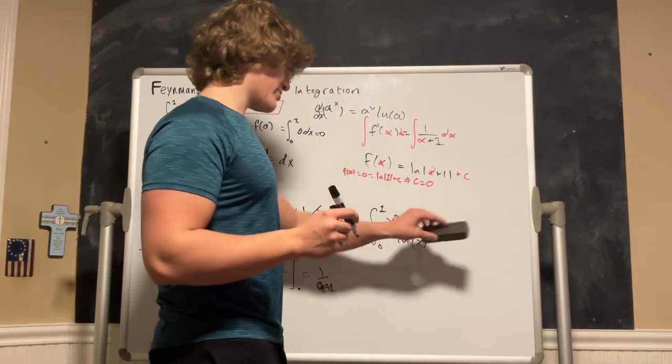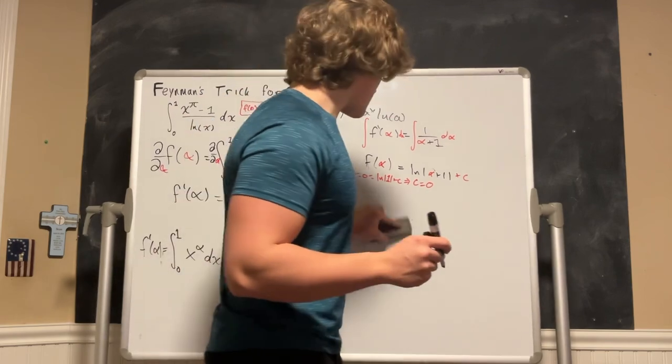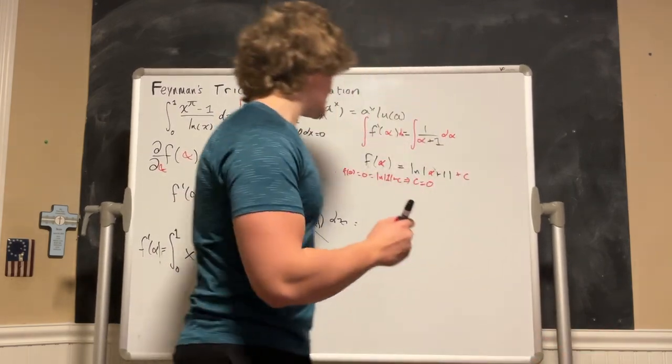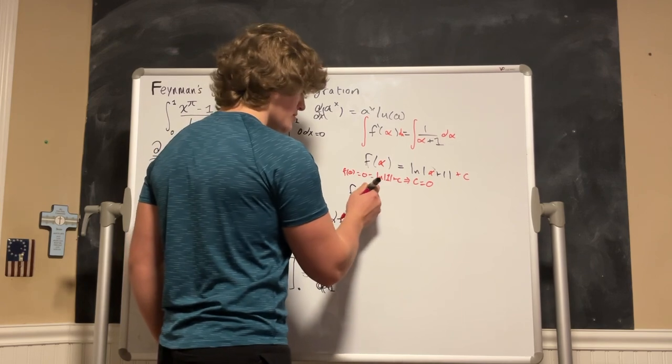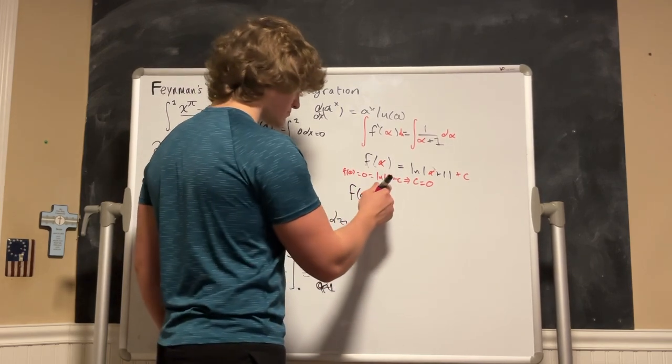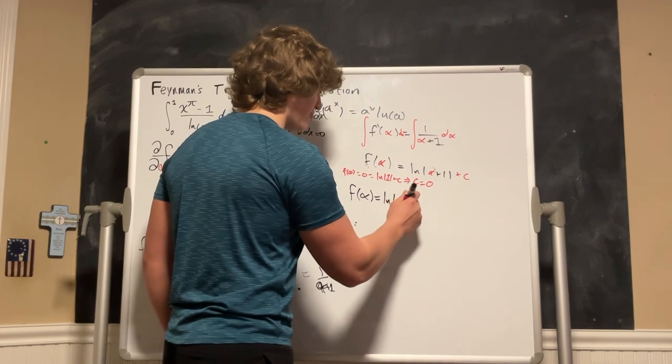So what we could say is, I'm going to erase this, make sure you remember this step before it goes away. So what you could say is that the function f of alpha is just equal to the ln of the absolute value of alpha plus 1.